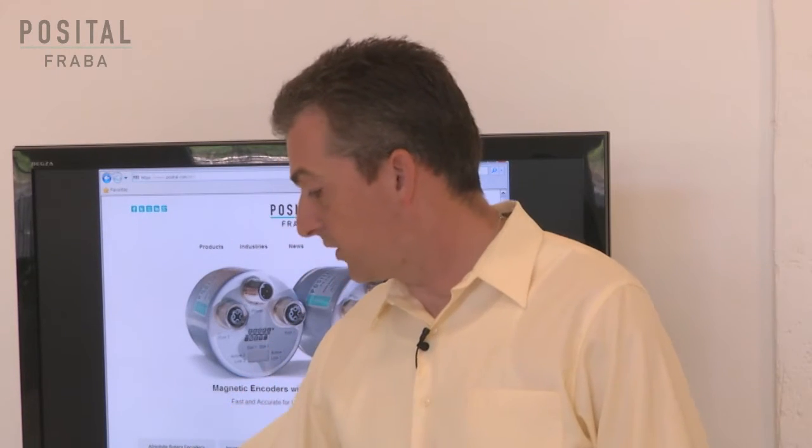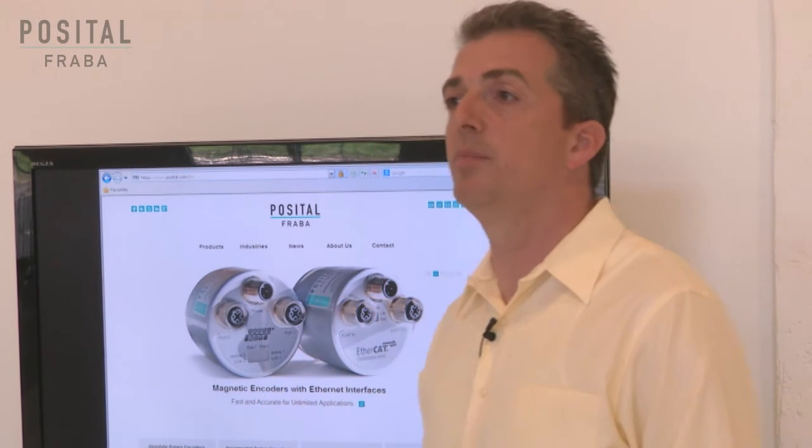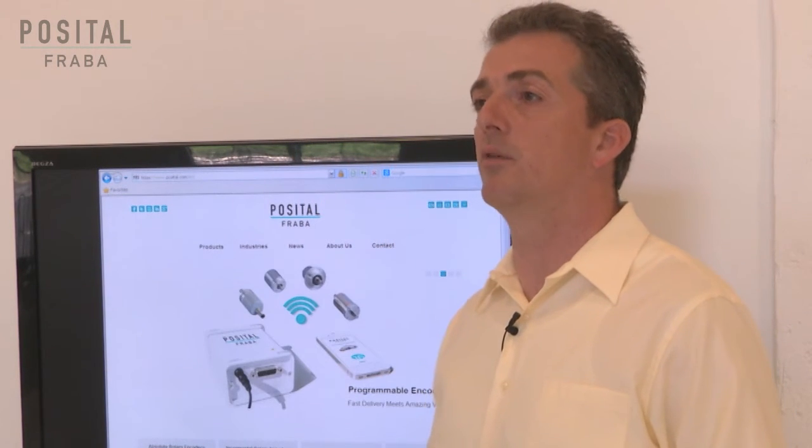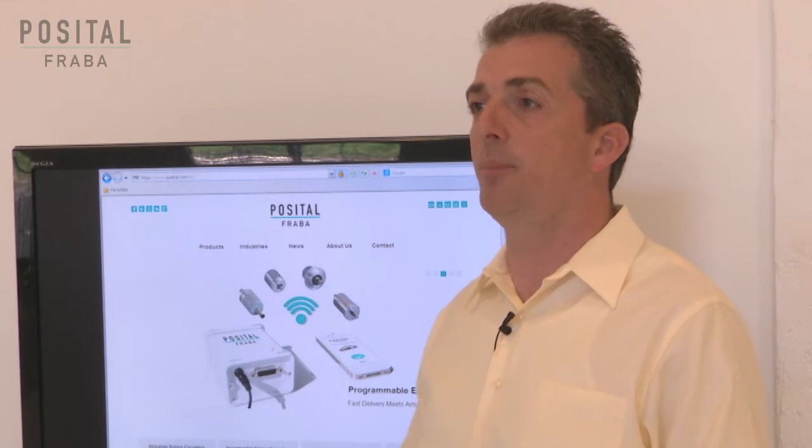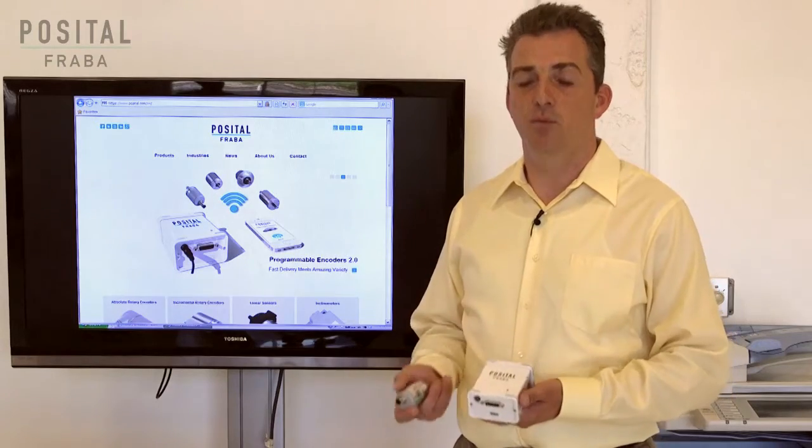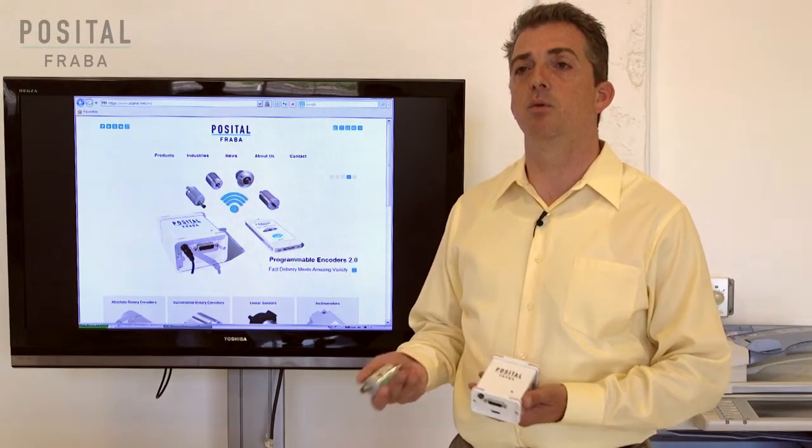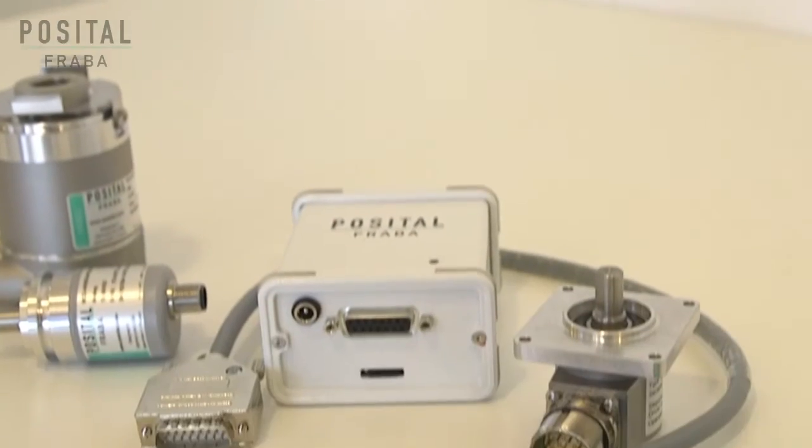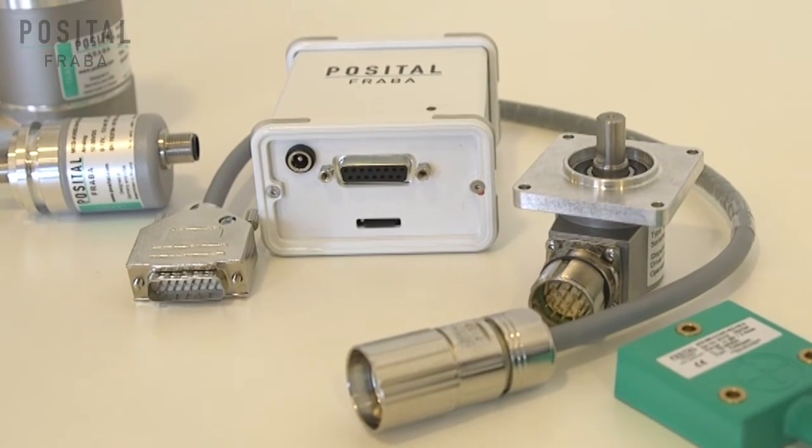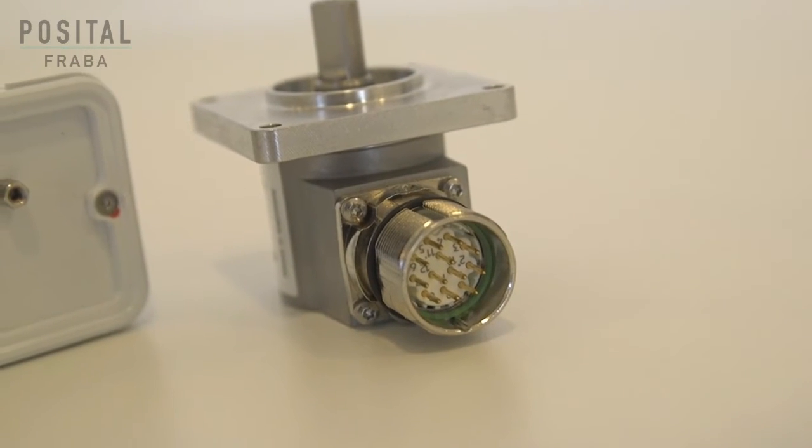Another interesting product, especially for mass distribution, is our programmable line of incremental and absolute encoders. It comes with a Wi-Fi hotspot that can be used to program the encoders, which means you can set up the configuration using any Wi-Fi-enabled device like your smartphone, tablet, or laptop.